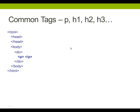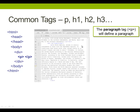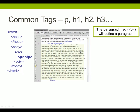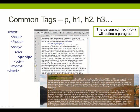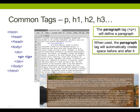Alright, so here are some other common tags: P, H1, H2, H3. P is a paragraph tag — it defines a paragraph. You can see in the code everything in between is one paragraph. On the web page, this is what it might look like. It automatically creates space before and after it by default, and you can change that with CSS.